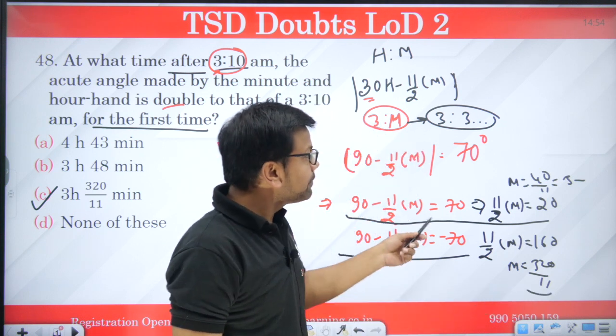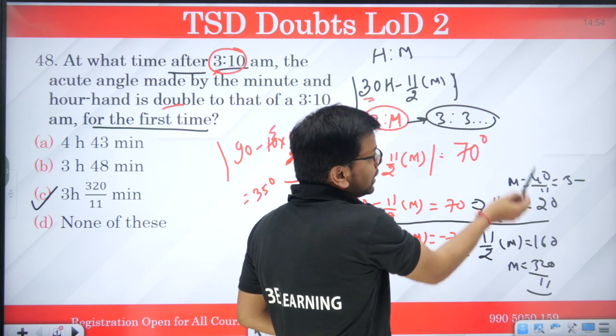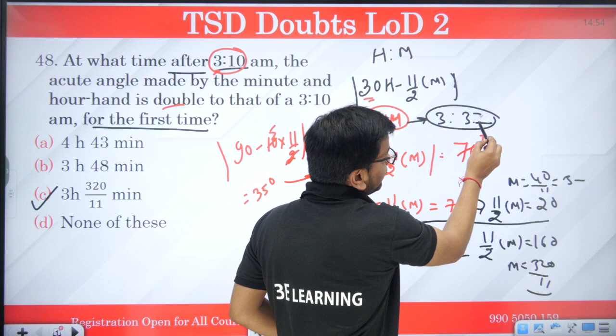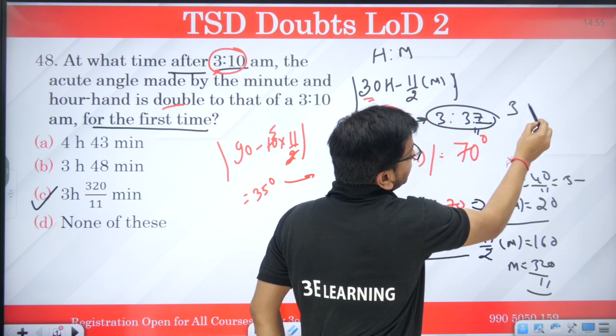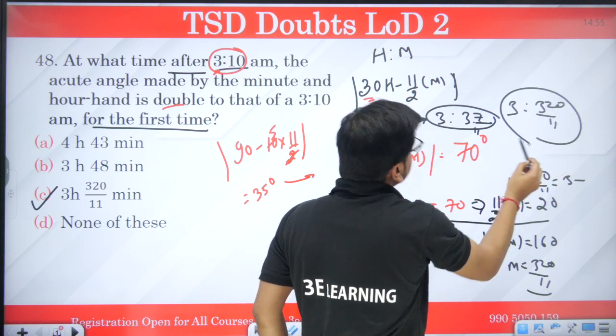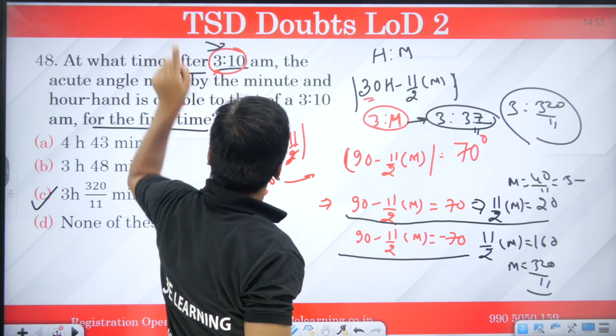So you get the answer. So you have 2 times, that is 3 7/11 or 3 320 by 11. This was my answer because I was asked after this.